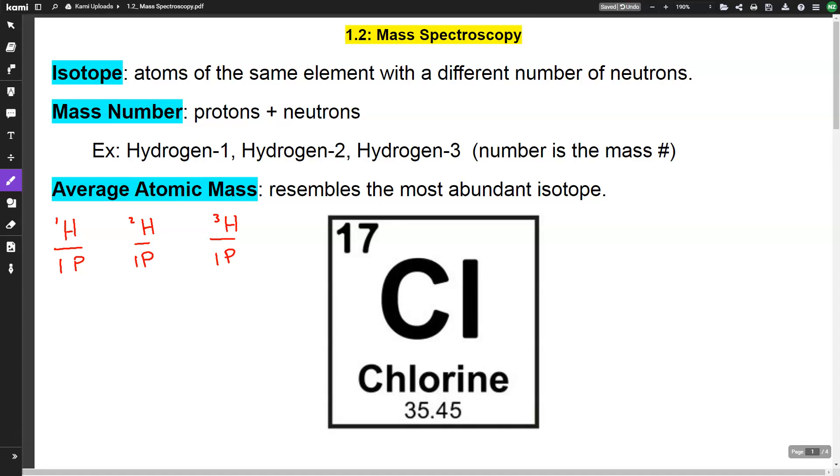Hydrogen-1 has a mass number of one. Hydrogen-2 has a mass number of two, so it's going to have one neutron for a total mass of two. Hydrogen-3 has one proton, so it's going to have two neutrons for a total mass of three. If you notice, all three of these are hydrogen, so they're all going to have one proton, but they have a different number of neutrons, which is the definition of an isotope.